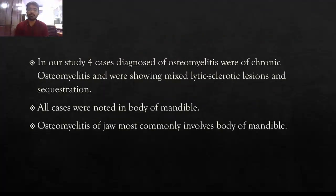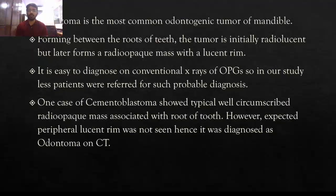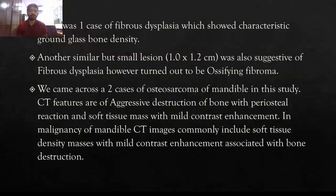Four cases were diagnosed with osteomyelitis, all being chronic osteomyelitis, which makes lytic and sclerotic lesions with sequestration. All cases were noted in the body of the mandible. Odontoma is the most common odontogenic tumor of the mandible, forming between the roots of the teeth. It will appear as a radiopaque mass with a lucent rim, easy to diagnose on X-ray or OPG. One case of fibrous dysplasia was seen, showing characteristic ground-glass bone density on CT. Another case that appeared as fibrous dysplasia on CT turned out to be ossifying fibroma on biopsy.